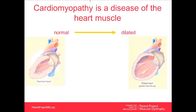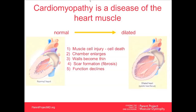Cardiomyopathy is a disease of heart muscle. When the heart muscle is diseased, it doesn't work as well as it should, and it oftentimes becomes dilated. The process of injury includes muscle cell death; the chamber then enlarges, the walls become thin, and scar tissue — known as fibrosis — forms within the heart muscle. After a critical mass of fibrous tissue accumulates, the function of the heart will then decline.